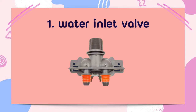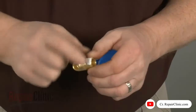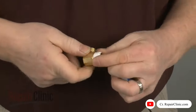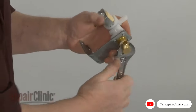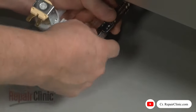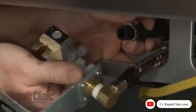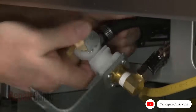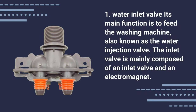First, Water Inlet Valve. Prepare the new Water Inlet Valve for installation. It is the main function which fits the washing machine, also known as the Water Inlet Valve. The Inlet Valve is mainly composed of an Inlet Valve and an Electromagnetic.